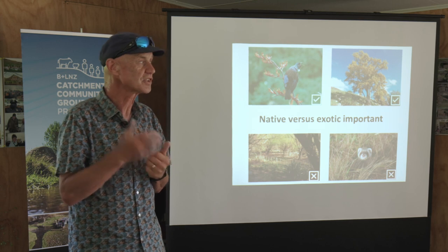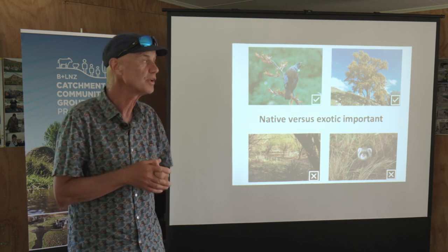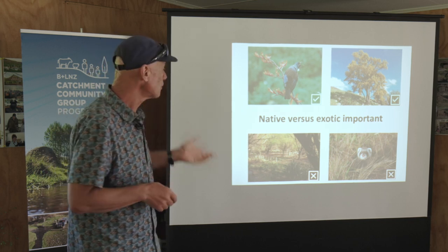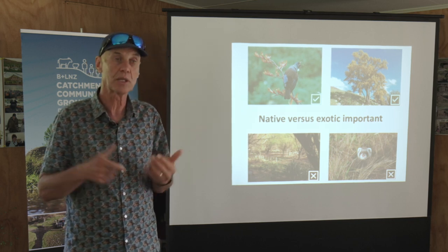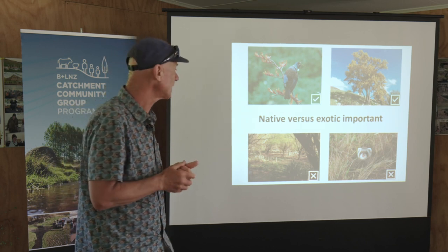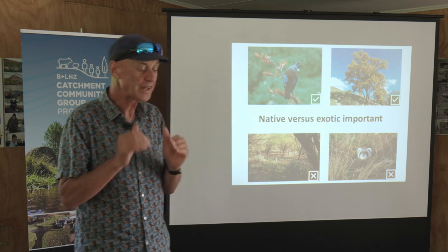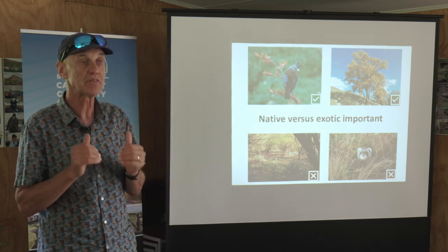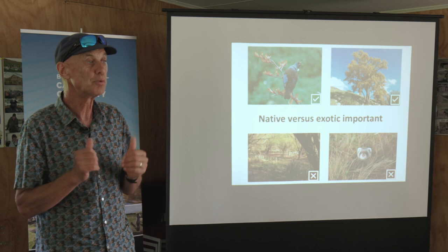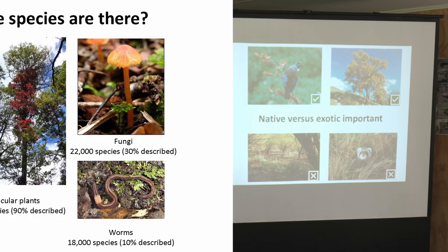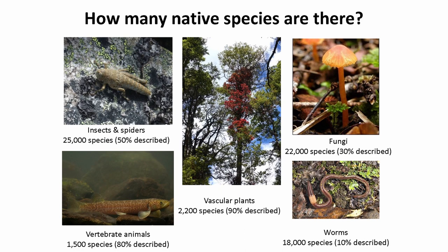A native species is a species that's arrived in New Zealand of its own accord — it dispersed here, or its ancestor dispersed here at some point. Whereas exotic species we either brought deliberately or they arrived accidentally as part of human activities. I'm not saying that exotic species are all bad; a lot of exotic species can play really important roles to support native biodiversity. But it's just recognising that the native species we're primarily interested in — and we have an awful lot of them. Our native biodiversity is actually surprisingly rich in New Zealand.